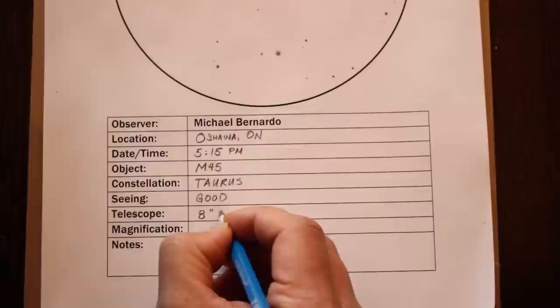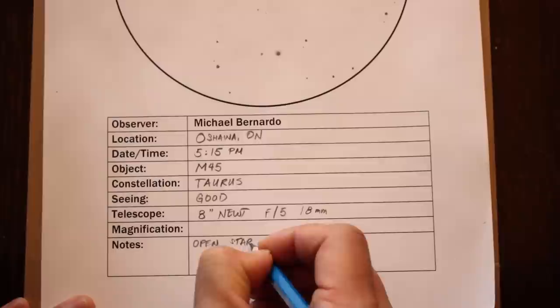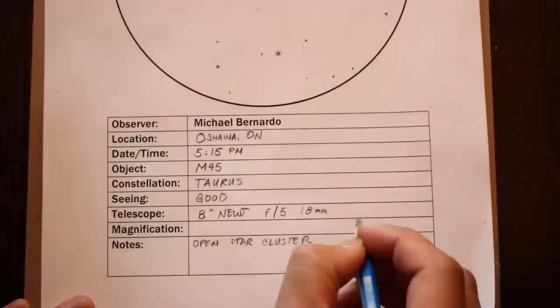On the sketch, write down your name, the date and time of your observation, and your location. Record the scene conditions. Was it poor, average, or excellent? Or rated out of five?